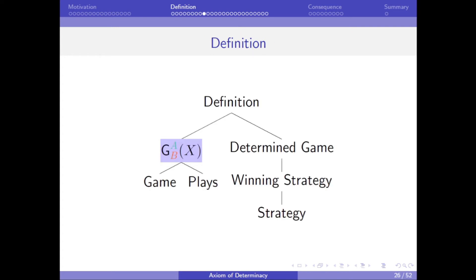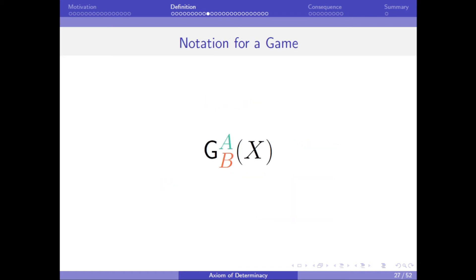Using these ideas, we can describe the notation for a general game of our type, which is G_AB of X. Where the G just represents that it is a game of our type. And as before, A and B represent the set of moves Alice and Bob can make, respectively. But the X represents how to win the game. In particular, X is the set of plays that Alice wins. And Bob wins all the other plays. So, in this game, there is no way to draw.